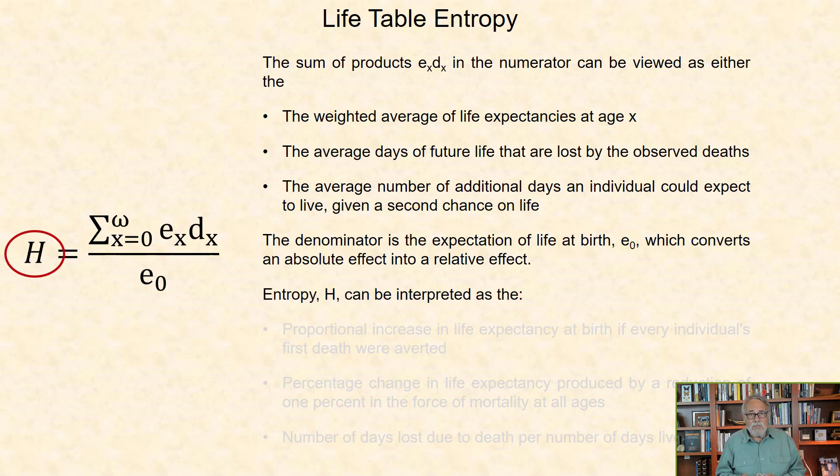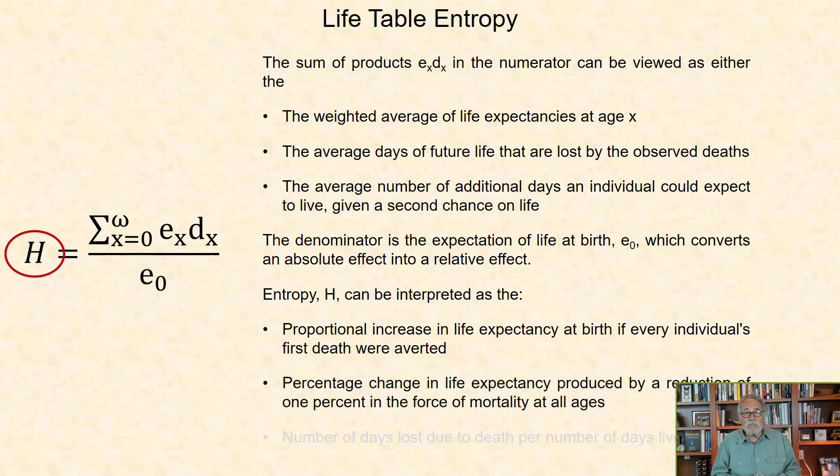Entropy H can be interpreted as either the proportional increase in life expectancy at birth if every individual's first death were averted, the percent change in life expectancy produced by a reduction of 1% in the force of mortality at all ages, or thirdly, the number of days lost due to death per number of days lived.